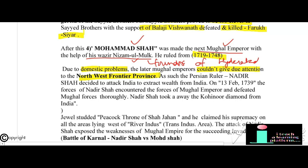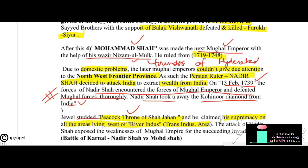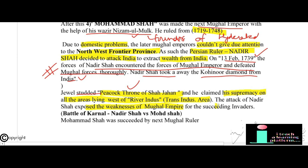The northwest frontier province was always a point of contention — whoever controlled it controlled India. The Persian ruler Nadir Shah decided to attack India to extract wealth. On 13th February 1739, at the Battle of Karnal, Nadir Shah's forces thoroughly defeated the Mughal emperor. Nadir Shah took away the Kohinoor diamond and the jewel-studded Peacock Throne of Shah Jahan, and claimed supremacy over all areas west of the River Indus. His attack exposed the weaknesses of the Mughal Empire to future invaders.